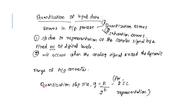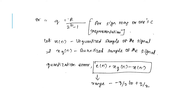The quantization step size Q for two's complement representation is R divided by 2 to the power of B. Whereas the quantization step size for sign-magnitude or one's complement representation is R divided by 2 to the power of B minus 1. Here R is the range of the analog signal to be quantized, and Q is the quantization step size.